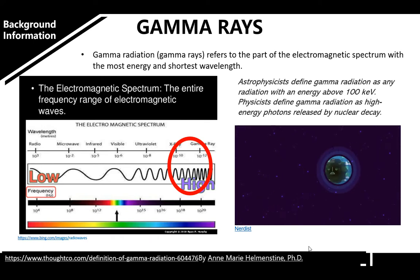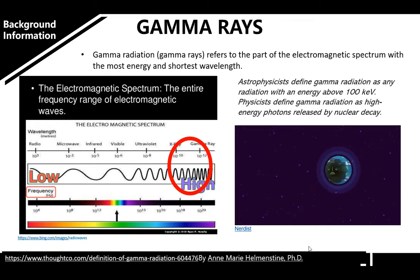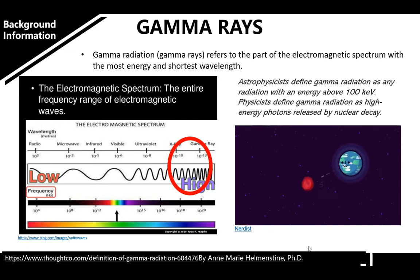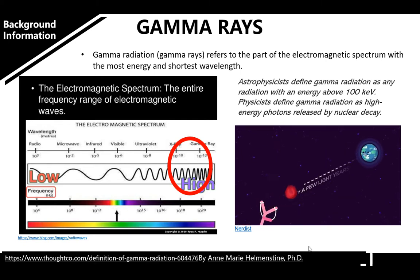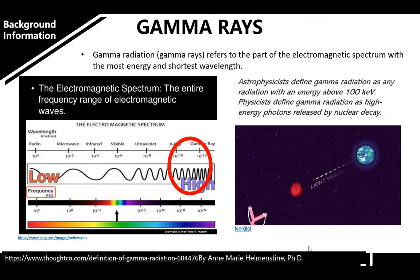Astrophysicists define gamma radiation as any radiation with an energy above 100 kiloelectron volt. Physicists define gamma radiation as high energy photons released by nuclear decay.